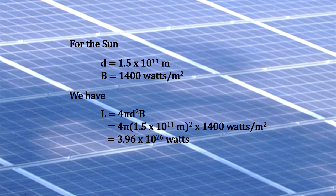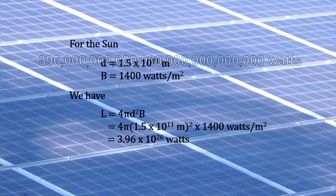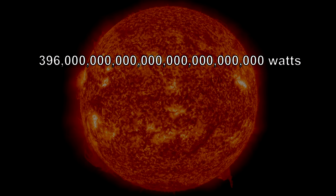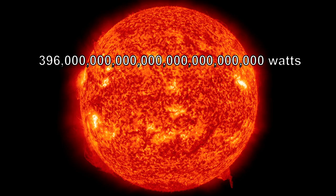Plugging our distance to the sun into the inverse square law, we calculate its total luminosity. Here you can see that the answer is a very big number.